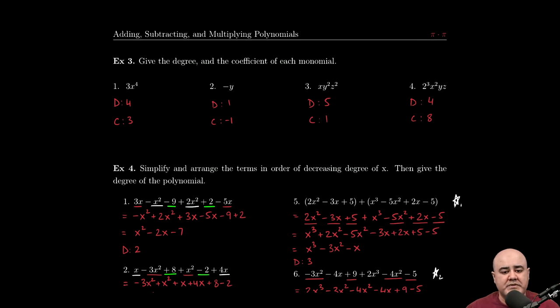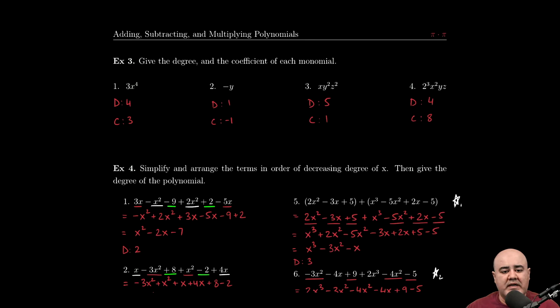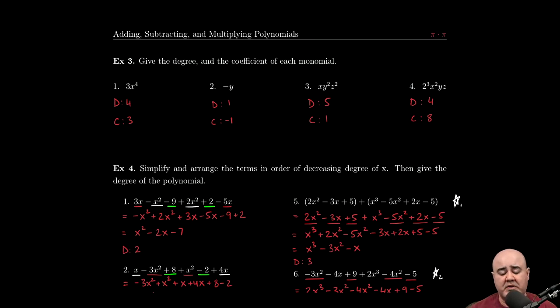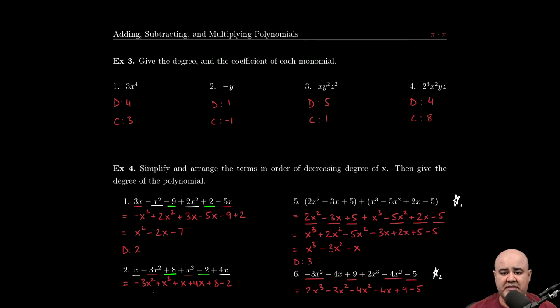Let's continue with some more examples. In the next one, we're asked to find the degree and the coefficient of each of the monomials that we're given. Remember that a monomial is a product. It's a single term, a product of a number and a variable or a bunch of variables. Either way, there's no sums or differences. It's just one single term that's all being multiplied together.